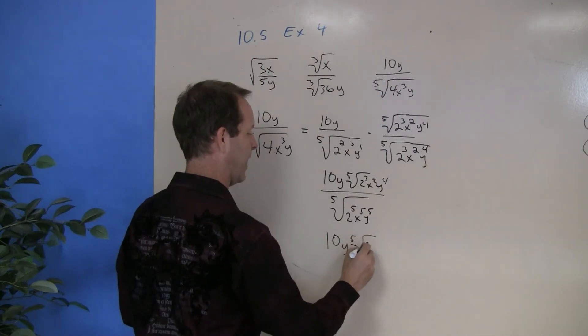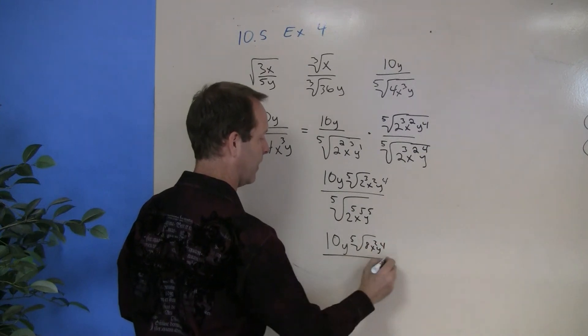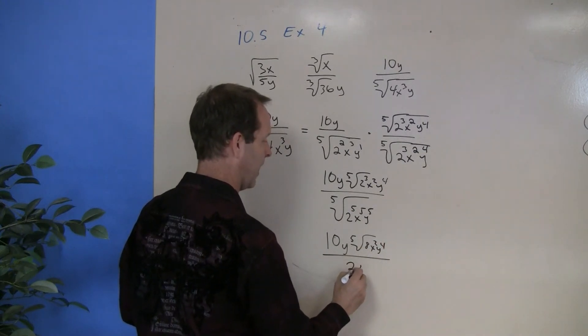Oh, actually guys, I can do one more thing to this problem I didn't realize. It looks like this y and this y cancels each other out. And this 10 and this 2 makes that a 5.